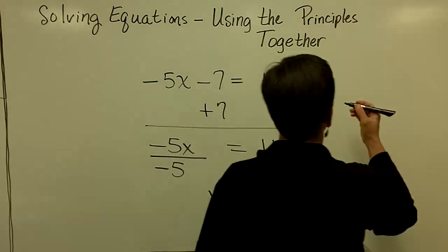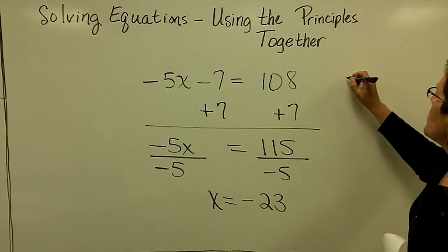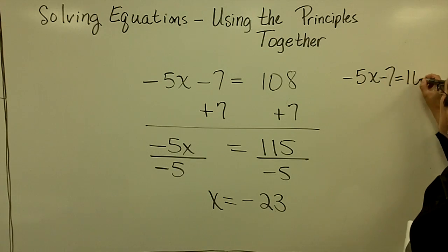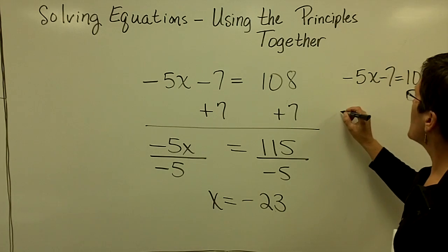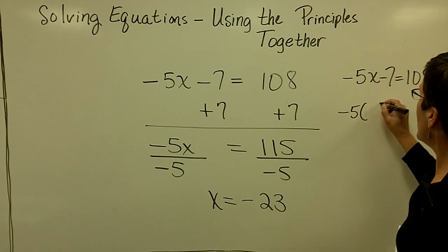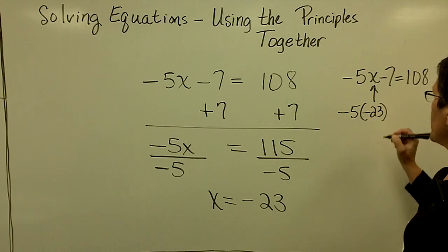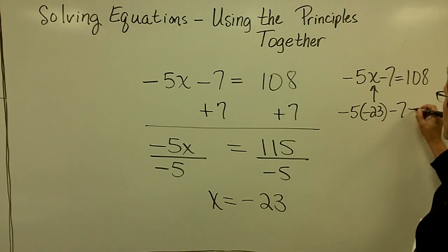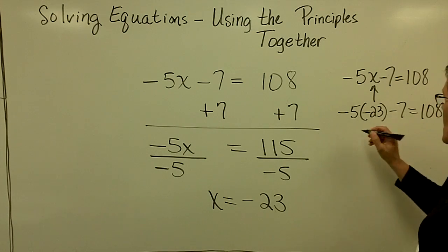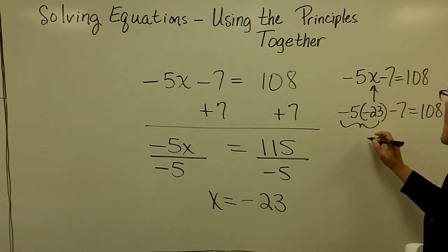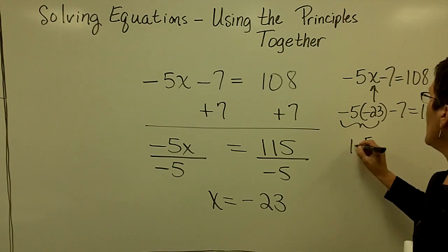I'll see if I have enough room over here. So the original problem is a negative 5x minus 7 equals 108, and I wonder what a negative 5 times a negative 23 will be, and then I'm going to subtract 7 from that. Let's see, a negative times a negative is a positive, and that would be 115.